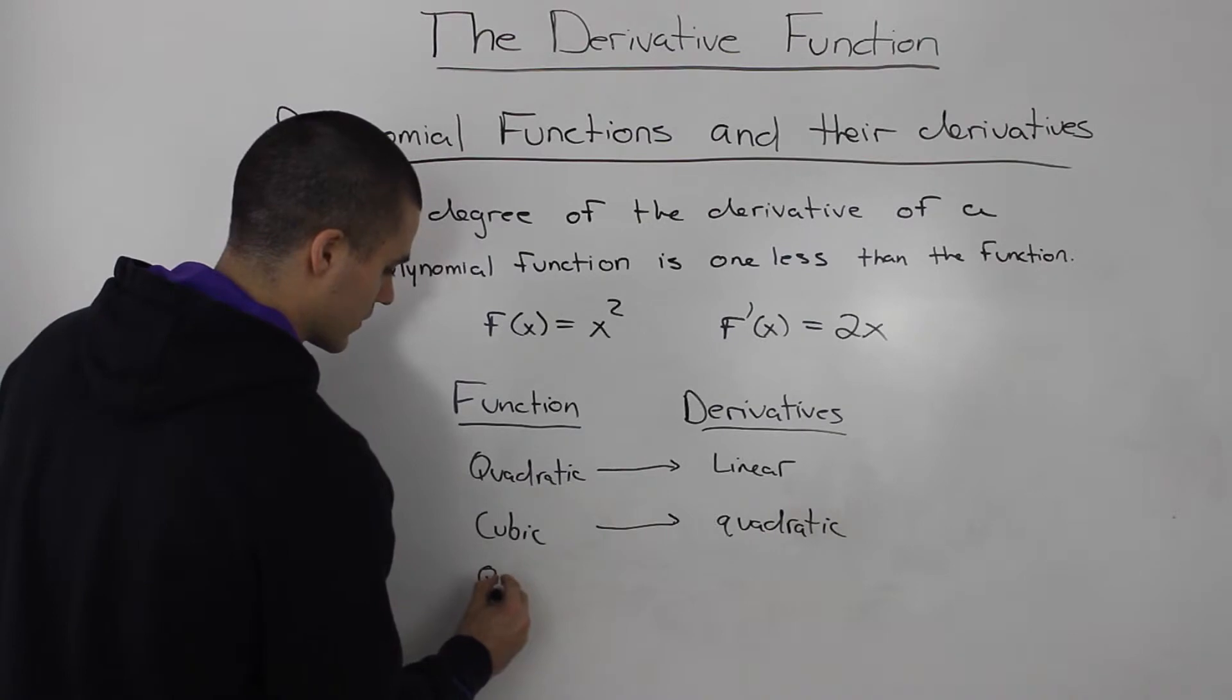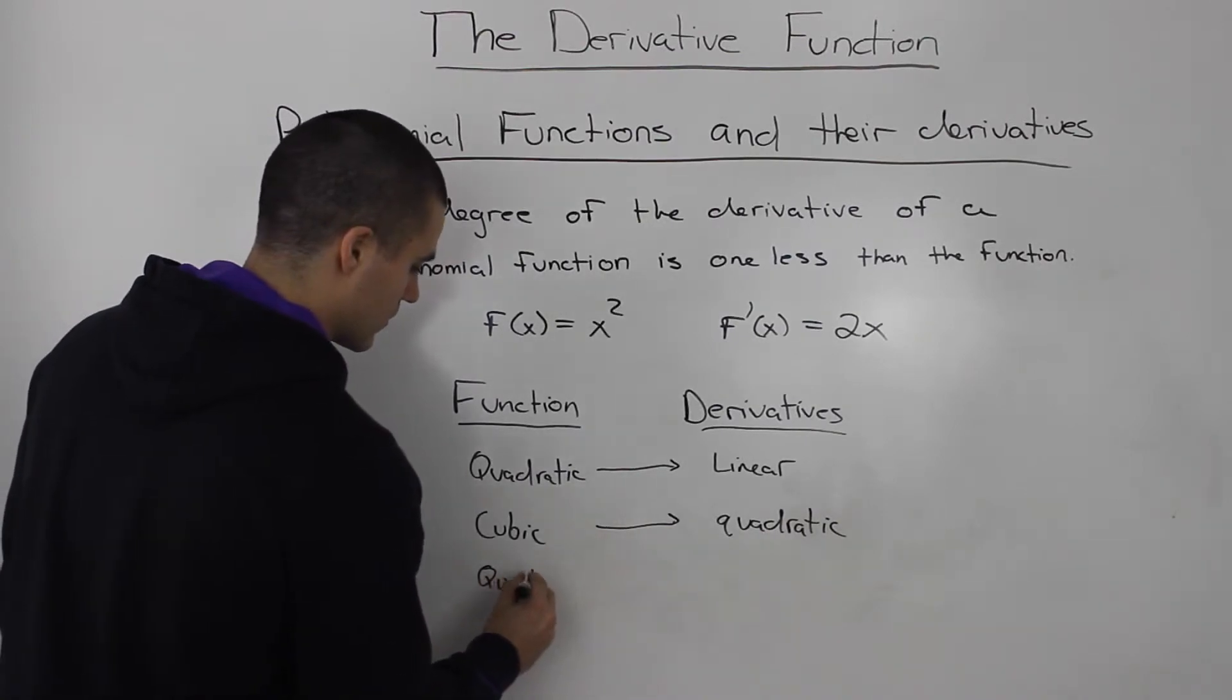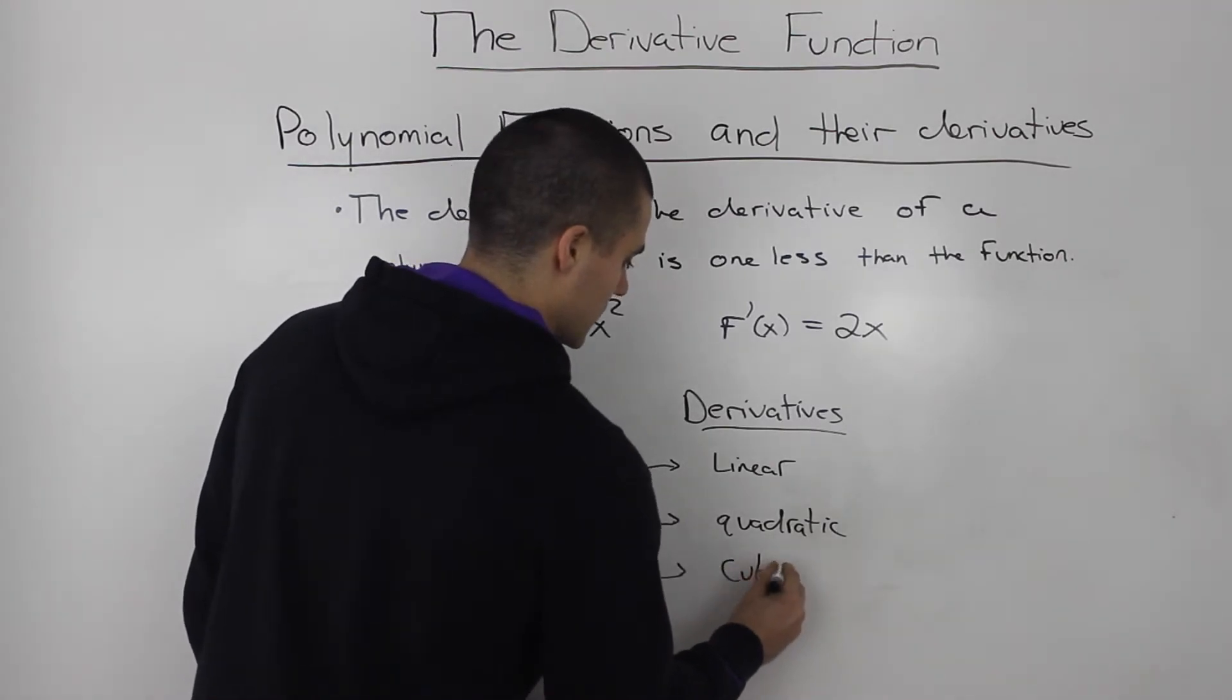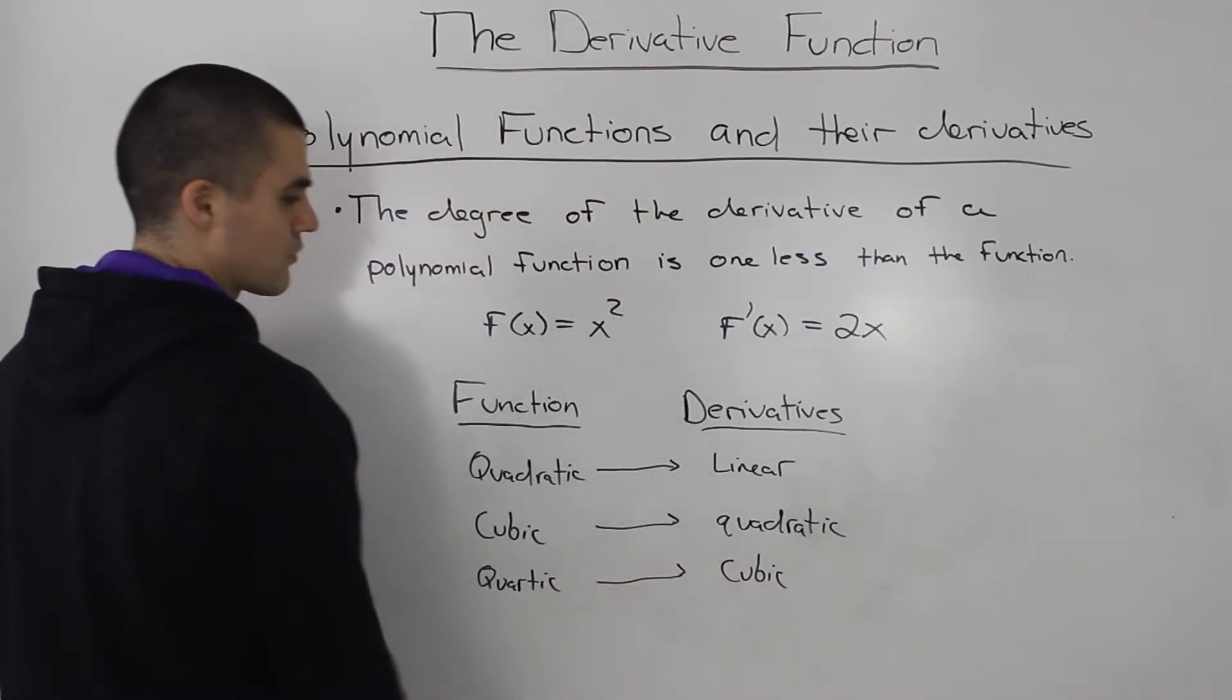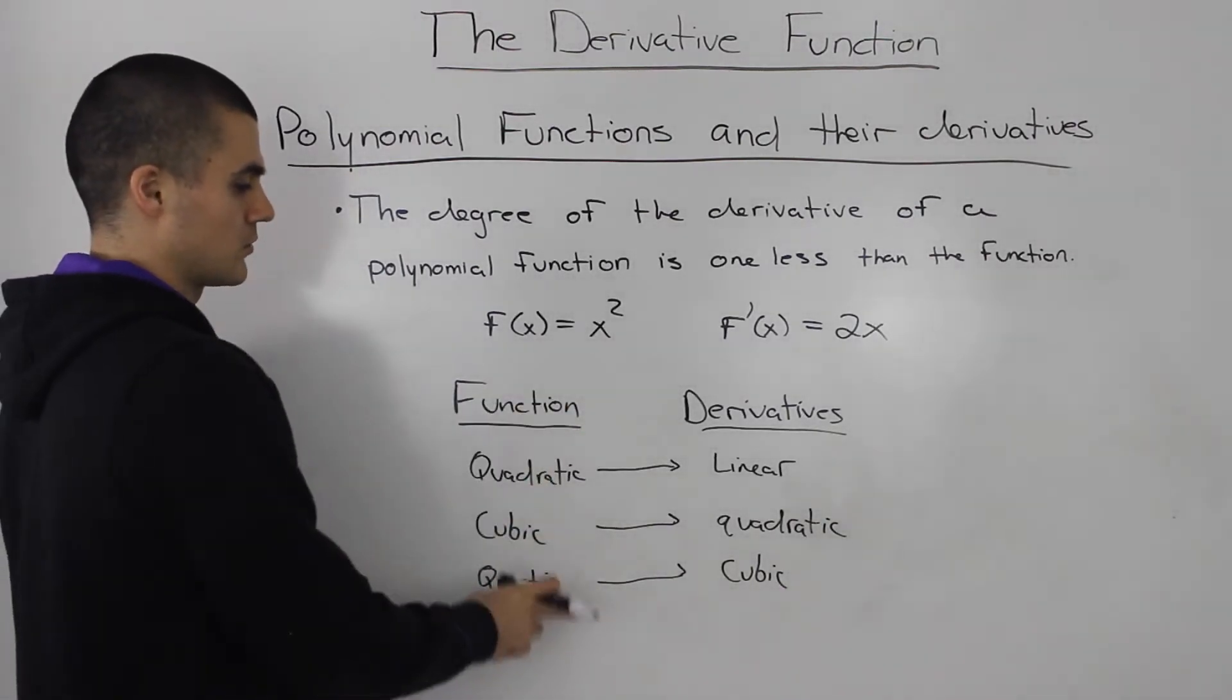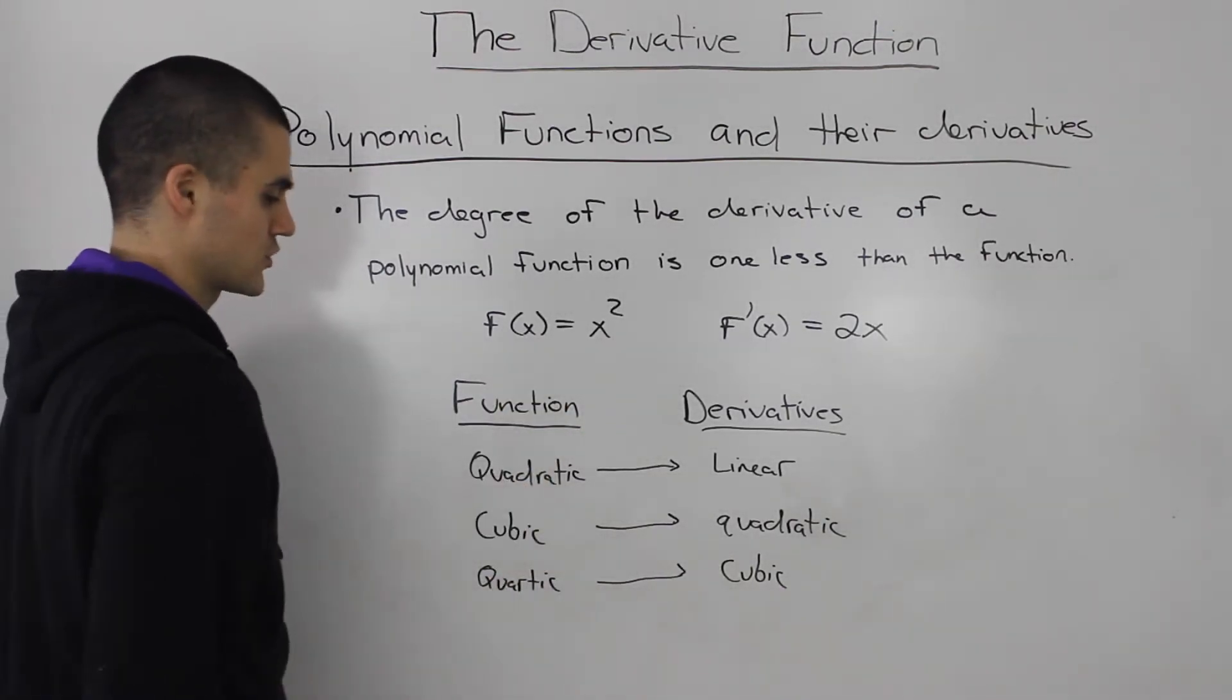If we have a quartic function, the derivative will be cubic, right? Degree of 4, degree of 3. So the derivative is always one less for a polynomial function than the actual function.